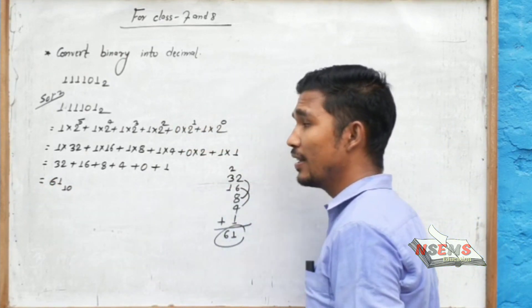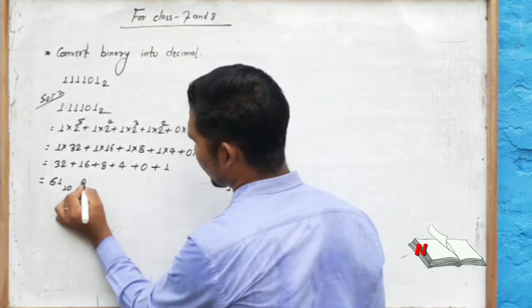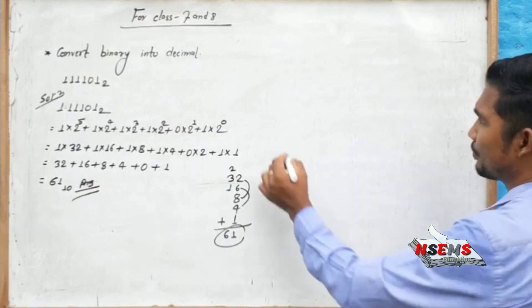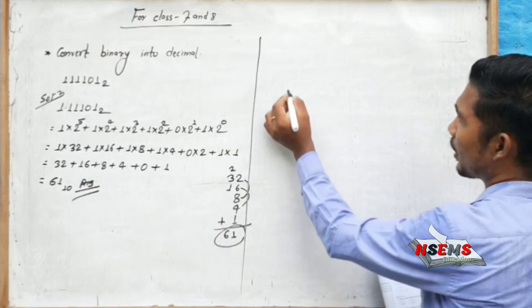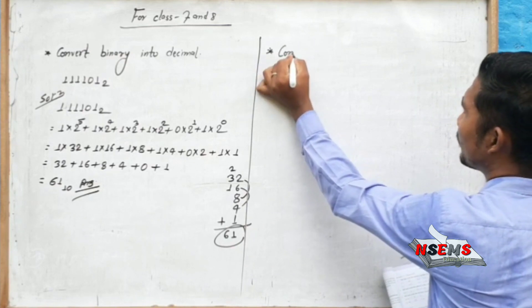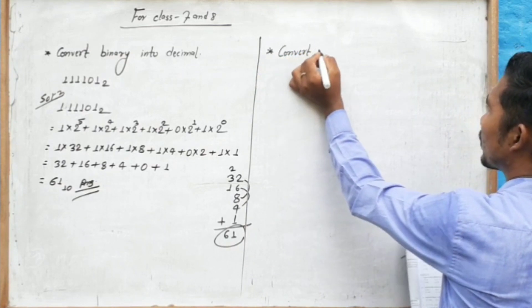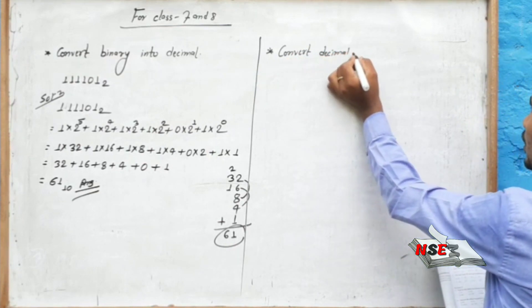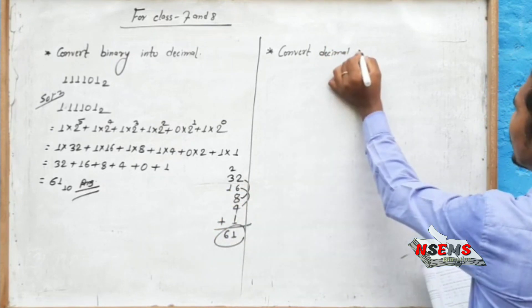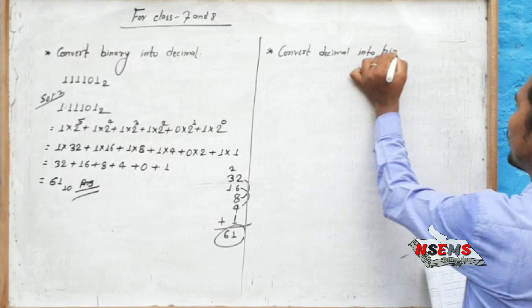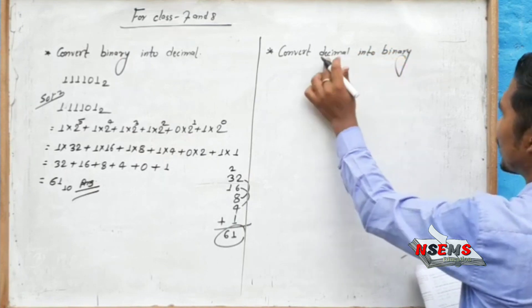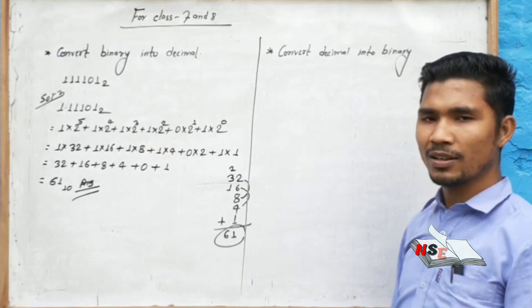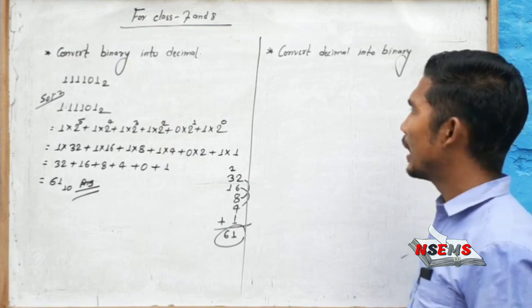So 61 is the decimal result. Now this is my number and I need to convert it. We will convert decimal into binary.